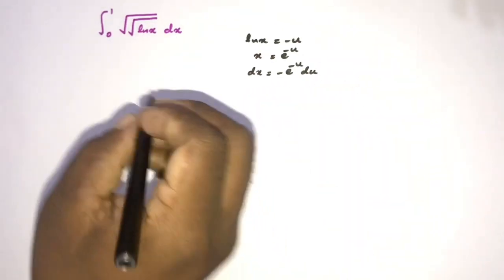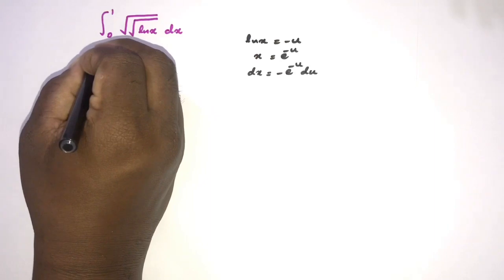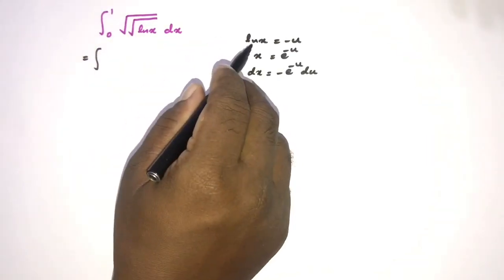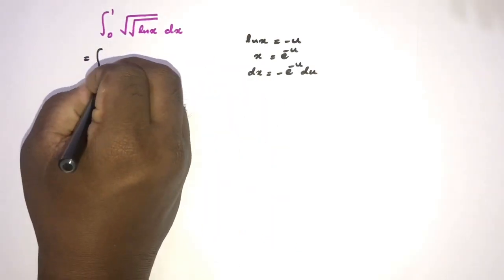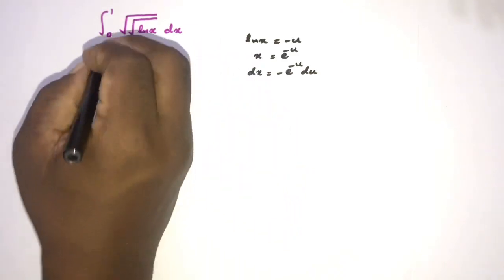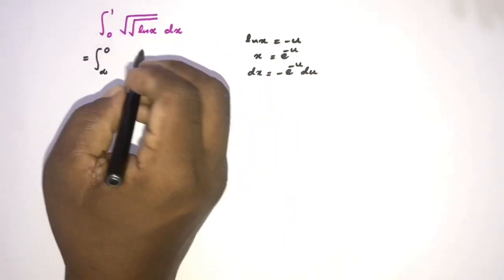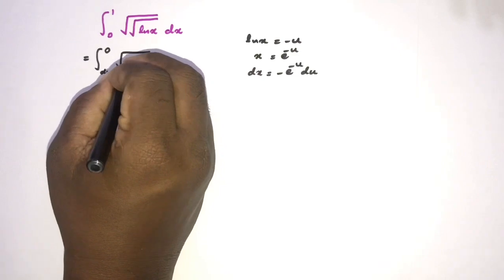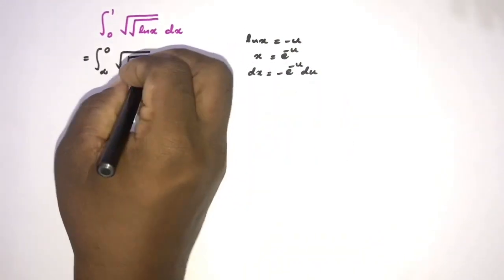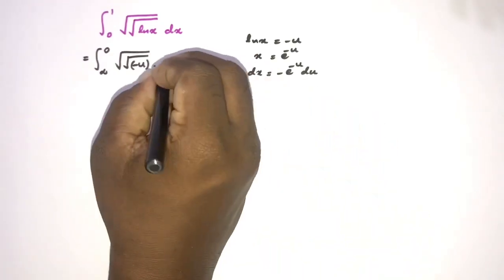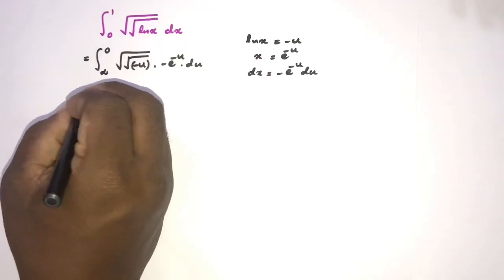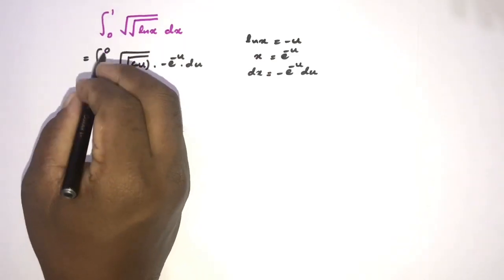Now we plug in and change the boundary limits. For the lower limit, when x approaches 0, u approaches infinity. For the upper limit, when x approaches 1, u approaches 0. We substitute the square root of the square root of natural log of x, which is the square root of square root of minus u, times dx which is minus e to the minus u du.